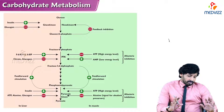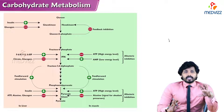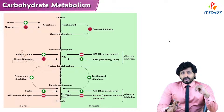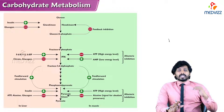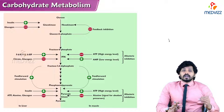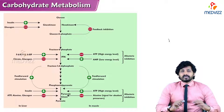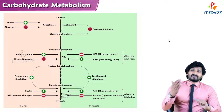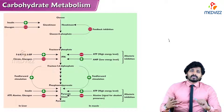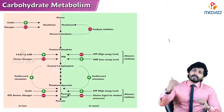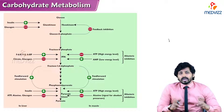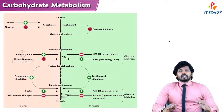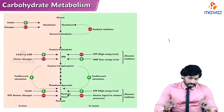Insulin is a hypoglycemic hormone — it decreases high glucose levels back to normal. Glucagon is a hyperglycemic hormone — when glucose is low, glucagon raises it back to normal by producing glucose. So both are antagonists: insulin promotes glycolysis and glucagon decreases glycolysis.